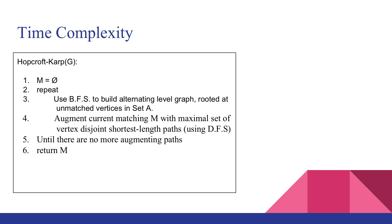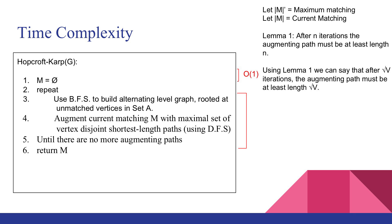Now we hopefully understand how the Hopcroft-Karp algorithm works. We are going to analyse the time complexity of the algorithm. First let's look at line 1: the initialisation of the current matching to null. This is an operation that takes constant time. Now let's take a look at lines 2 to 5. We let m' equal the maximum matching, m equal the current matching, and we have a lemma stated.